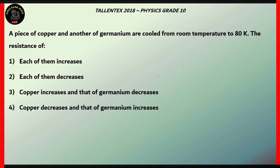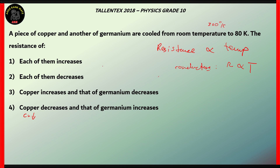This question has to do with the resistance of substances with respect to temperature. When we look at conductors like copper, resistance is directly proportional to temperature. Therefore, the resistance of copper (Cu) actually decreases when you decrease the temperature from room temperature — which is 300 degrees Kelvin — down to 80 degrees Kelvin. As you decrease the temperature, the resistance also decreases.